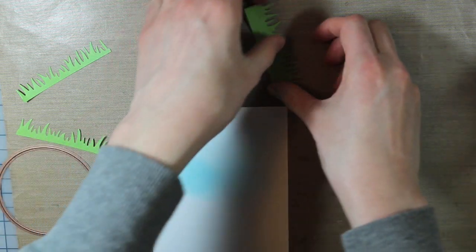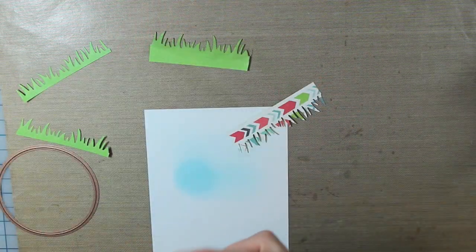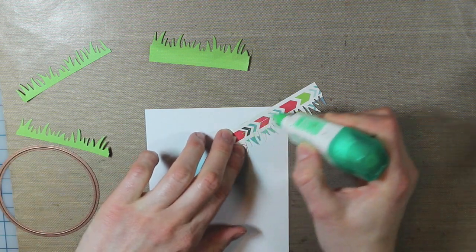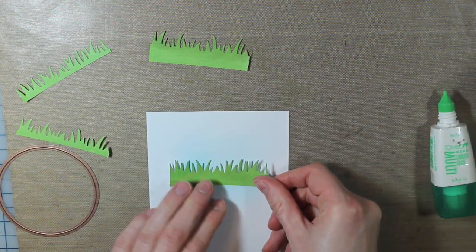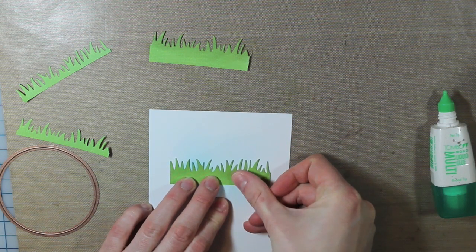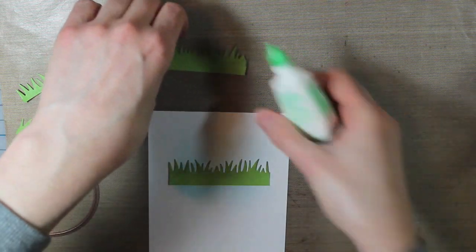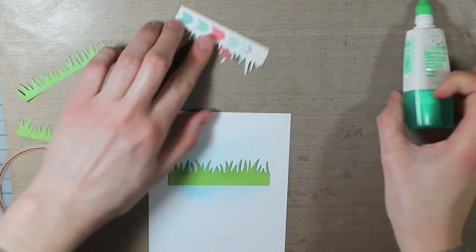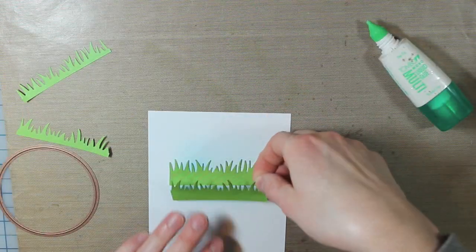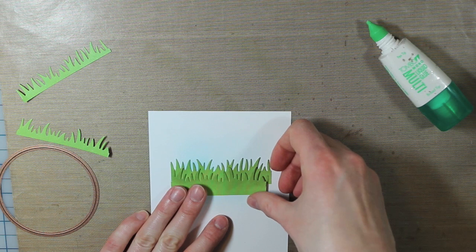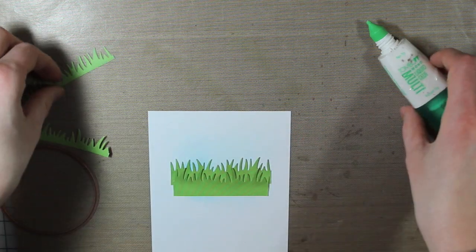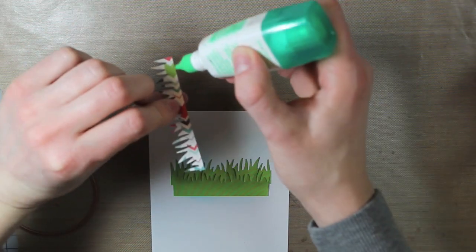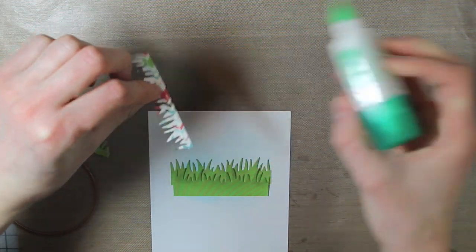Now I can go ahead and adhere those onto that piece of white cardstock. I'm just using a little bit of my Tombow Mono Multi Glue. I'll start with the top one, and then I'm just going to place this one a little bit lower than that other one. So you can see it's going to be a whole scene full of grass. And then I'll just adhere the other two into place as well.